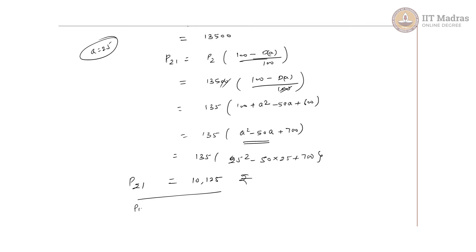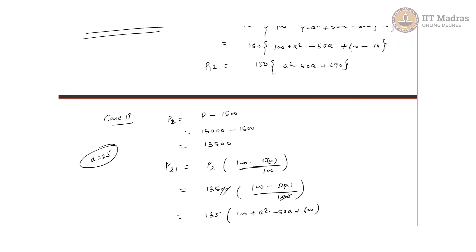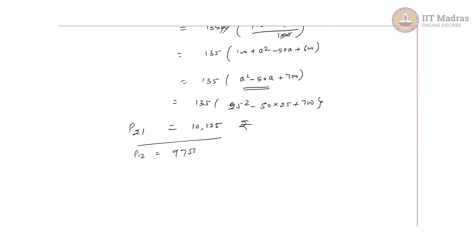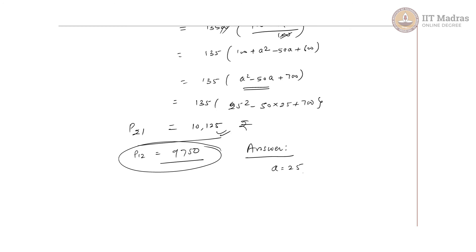Comparing the two cases: P12 is 9,750 and P21 is 10,125. Clearly P12 is the lesser amount. So the answer is: A should equal 25, meaning Rohan should use his friend's birthday, and he should apply the birthday offer first and then the Sunday offer. The minimum payable amount is 9,750.